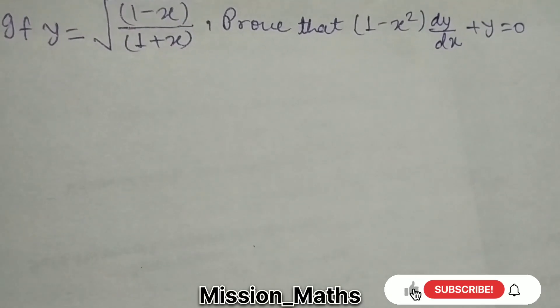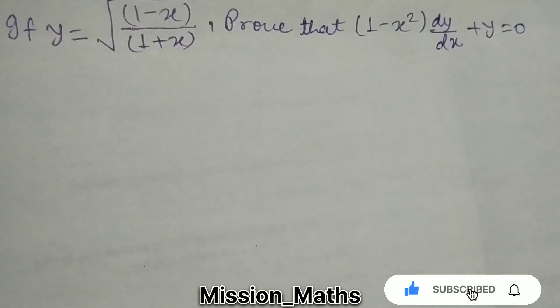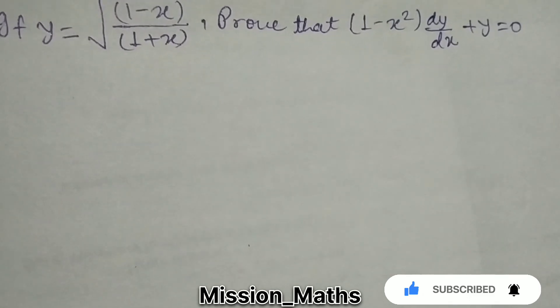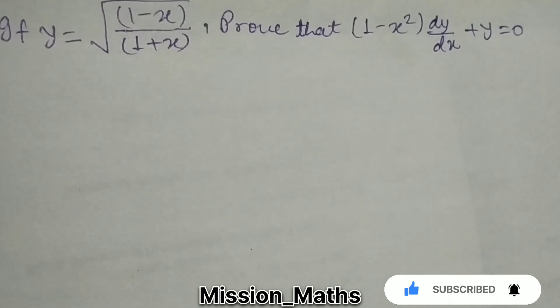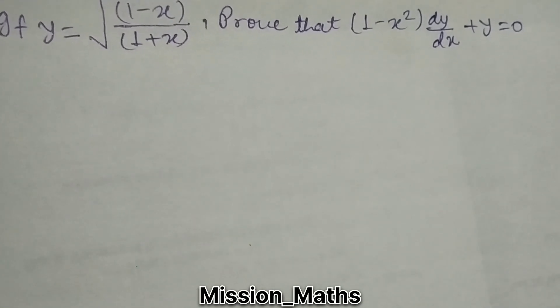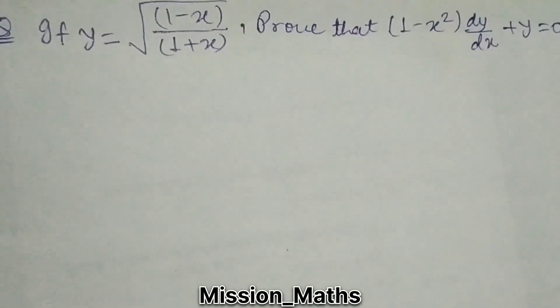We have a question: if y is equal to root under (1 minus x) upon (1 plus x), then prove that (1 minus x squared) dy upon dx plus y is equal to 0.